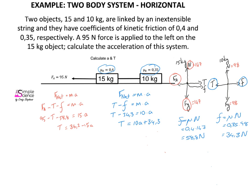Since this is the same rope in a two-body system, the two tension expressions must be equal to each other. So 36.2 − 15a = 10a + 34.3. Solving this gives an acceleration of 0.084 meters per second squared to the left. Don't forget that acceleration is a vector.